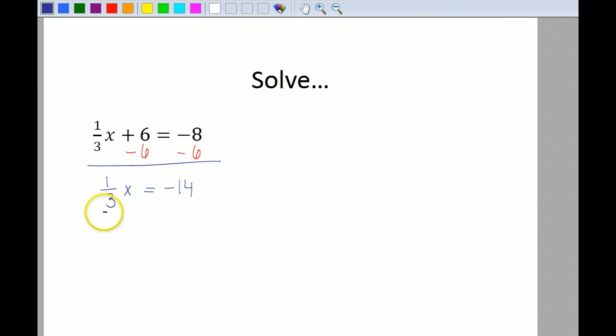So now one-third is the only thing that's attached to the x. I have a fraction for my coefficient, so what do I do? That's right, I'm going to multiply by the reciprocal. The reciprocal of one-third is 3 over 1. What I do to one side, I have to do to the other. So now we have x is equal to negative 14 times positive 3. Negative times a positive gives me a negative. Negative 14 times 3 gives me negative 42, and that is my solution.